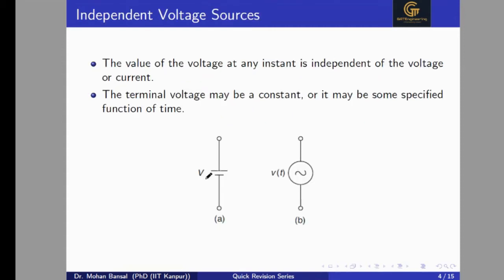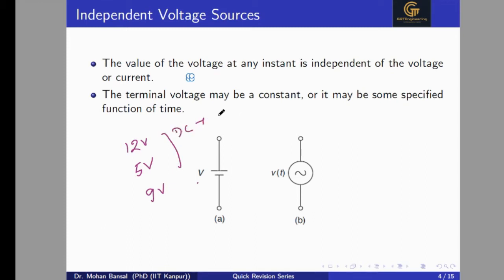The value of the voltage at any instant which is independent of the voltage or current in the circuit is called an independent voltage source. Its value will not depend on any other parameter like current or voltage of any other elements in the circuit. The terminal voltage may be constant or it may be some function of time — if constant, like 12V, 5V, or 9V battery, these are DC voltage supplies.